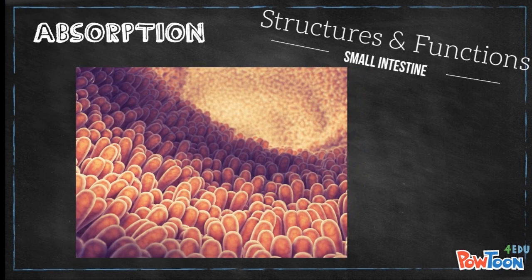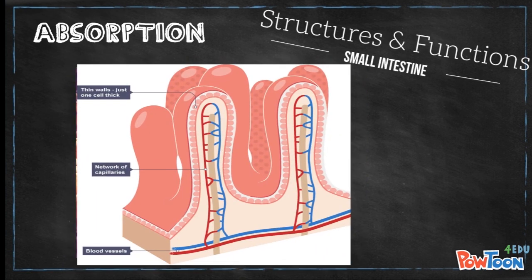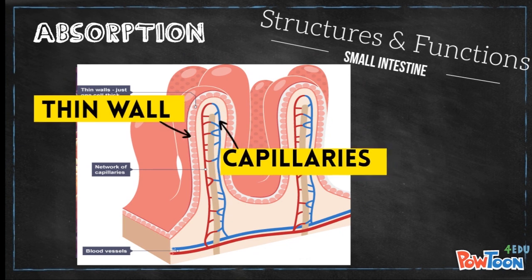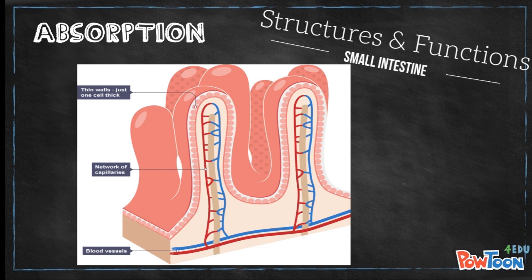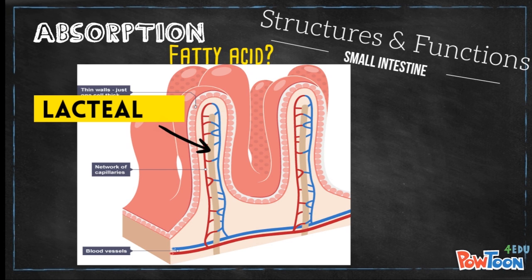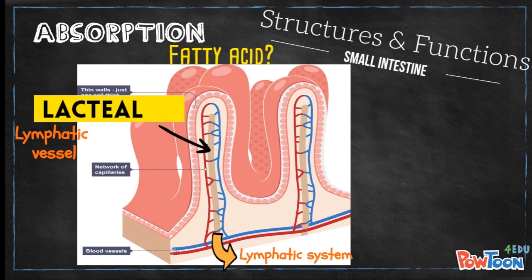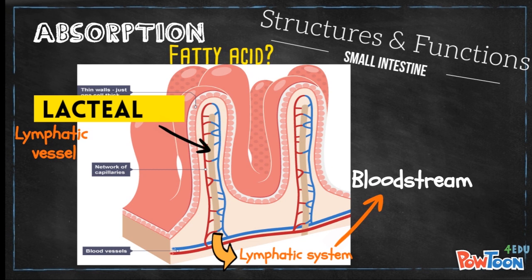The villi wall is only one cell thick, which is very thin. Inside each villus, there is a dense network of capillaries, so that food substances like glucose and amino acids can be rapidly absorbed and transported by the bloodstream. Fatty acids, however, are larger in size and cannot enter the capillaries directly. They are absorbed through a structure called the lacteal, which is a lymphatic vessel connecting to the lymphatic system, which in turn connects to blood circulation — so fatty acids eventually reach the bloodstream just like the other food substances.